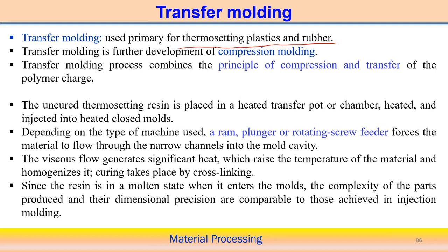In transfer molding, uncured thermosetting resin is first heated in a heated transfer pot or chamber, then injected into the mold cavity — which can also be heated. Depending on the machine type, the liquid resin can be transferred using a ram, a plunger, or a rotating screw feeder that forces the resin into the mold cavity.